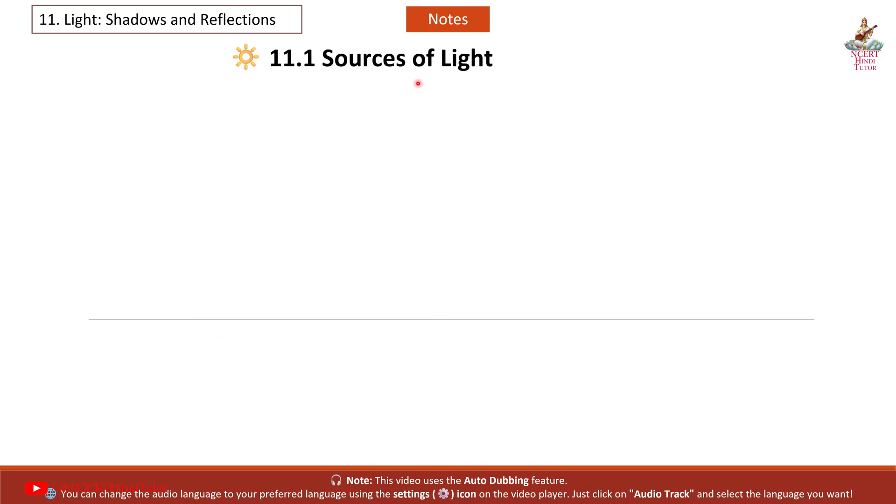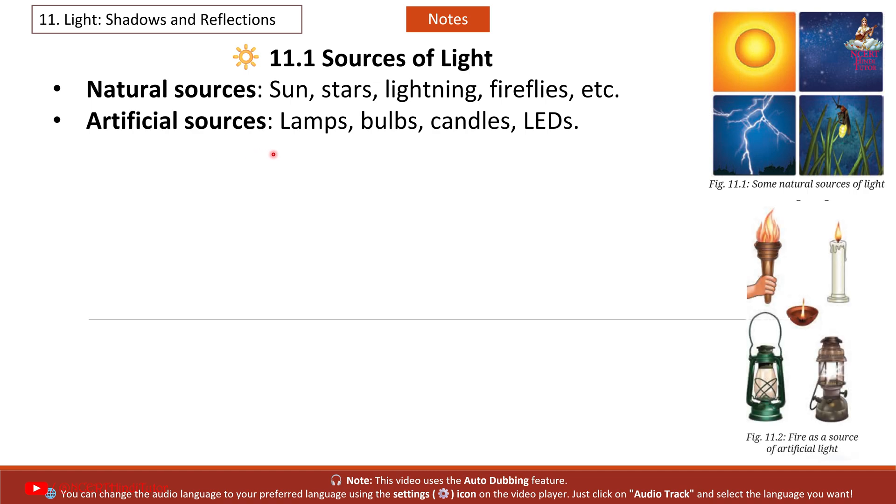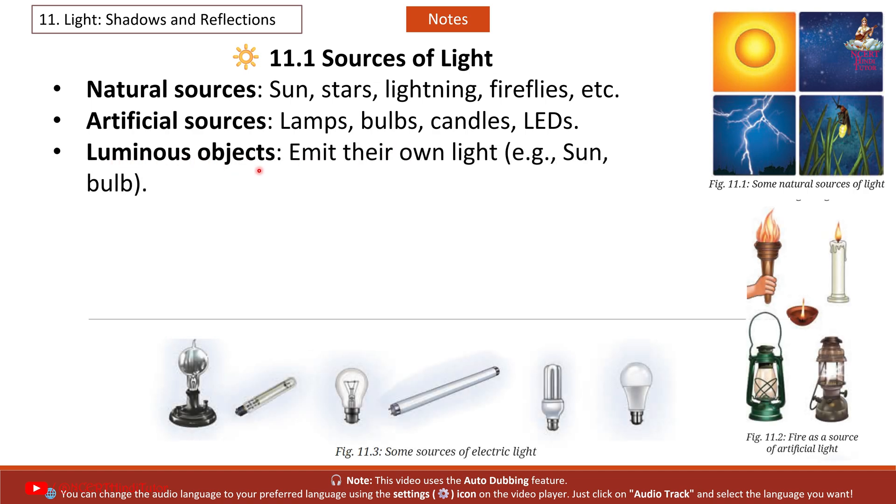11.1 Sources of Light. Natural sources: Sun, Stars, Lightning, Fireflies, etc. Artificial sources: Lamps, Bulbs, Candles, LEDs. Luminous objects emit their own light, example: Sun.